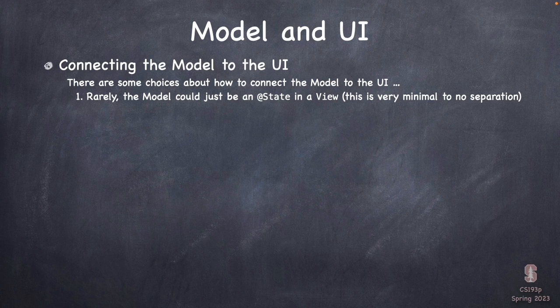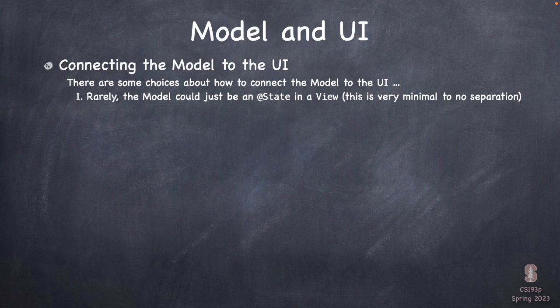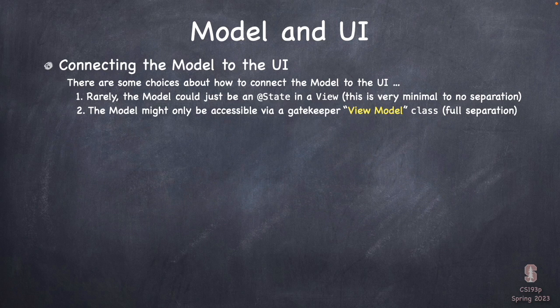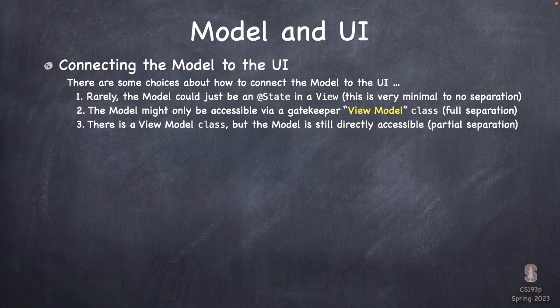How do the UI and the model connect to each other? There are three ways. Rarely, you could have the model be @State in a view — but this is extremely minimal separation. Number two is that the model is only accessible to the UI via a gatekeeper whose job is to keep the UI and the model communicating safely. This is the main MVVM approach — 99% of the time when you build an application.